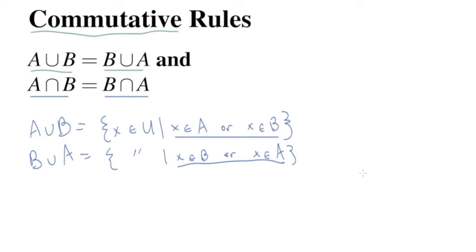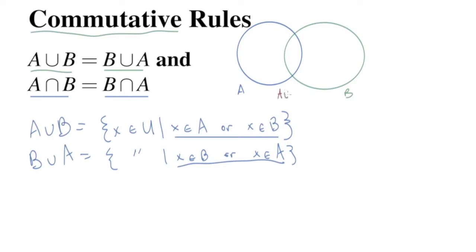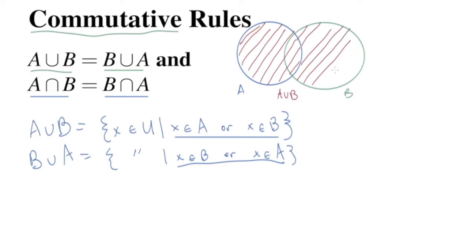Let's visualize this with a Venn diagram. Say we've got one set here, call it A, and another set here, call it B. If we model A union B, it would be anything in A or anything in B - so A union B is the total area of the sets A and B. Now if we model B union A, it would be the total area of B and A. So B union A is exactly the same as A union B.